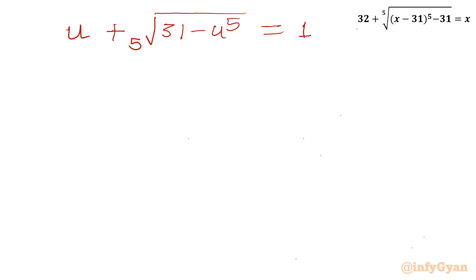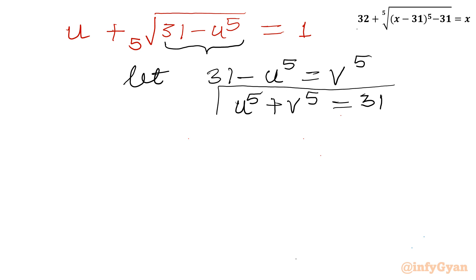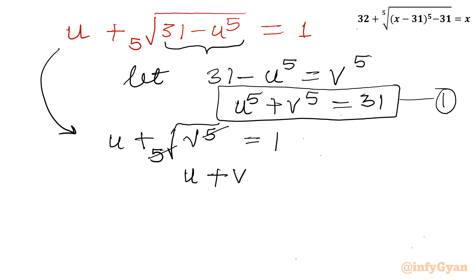Now I will use a second substitution. Let 31 minus u power 5 equal to v power 5. From this we get equation 1: u power 5 plus v power 5 equals 31. And from our expression, u plus the 5th root of v power 5 equals 1 — the 5th root and power 5 cancel — giving equation 2: u plus v equals 1.